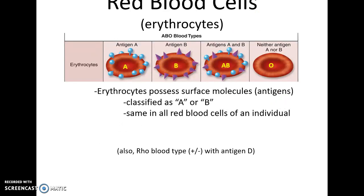Red blood cells, the erythrocytes, all have antigens on their surfaces. These include A antigen and/or B antigen. They might have both A and B antigens or none at all — and this is what we mean when we talk about blood types. There are also the Rh blood types, the plus and minus, with the D antigen. If you're positive, you have antigen D, and if you're negative, you lack it.